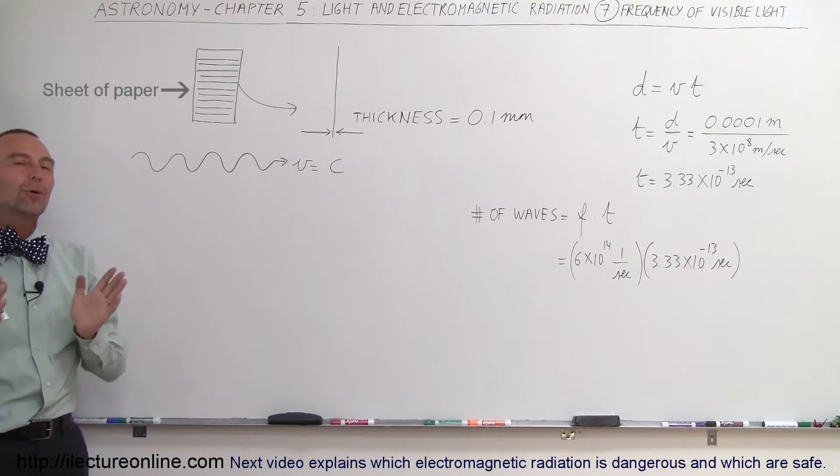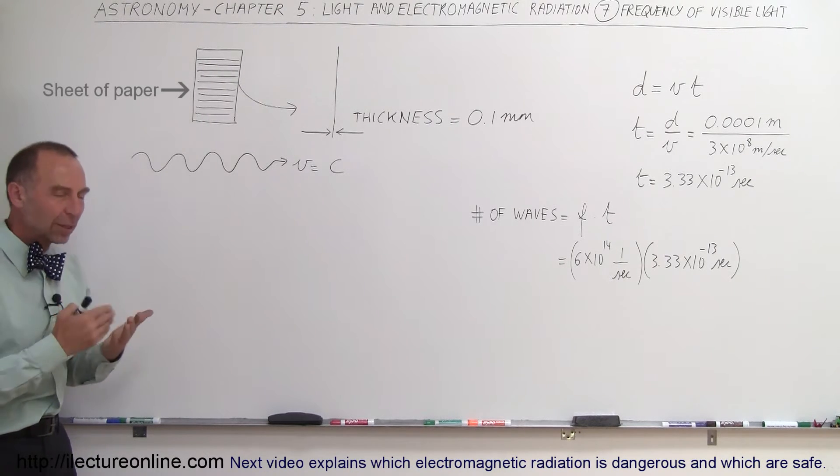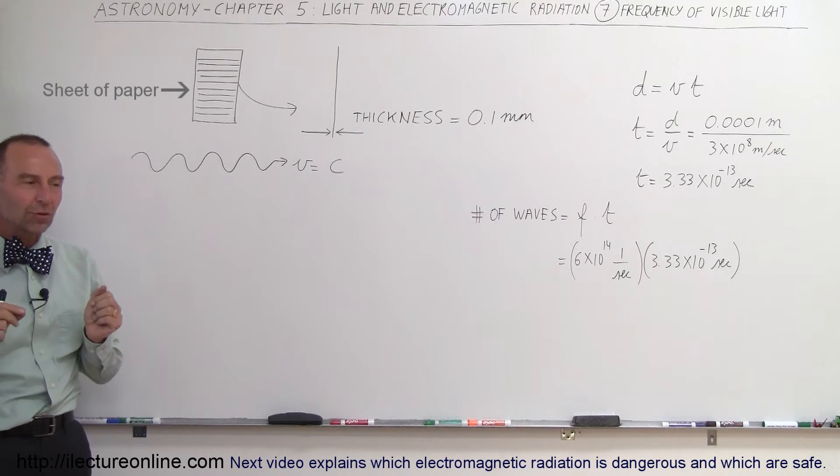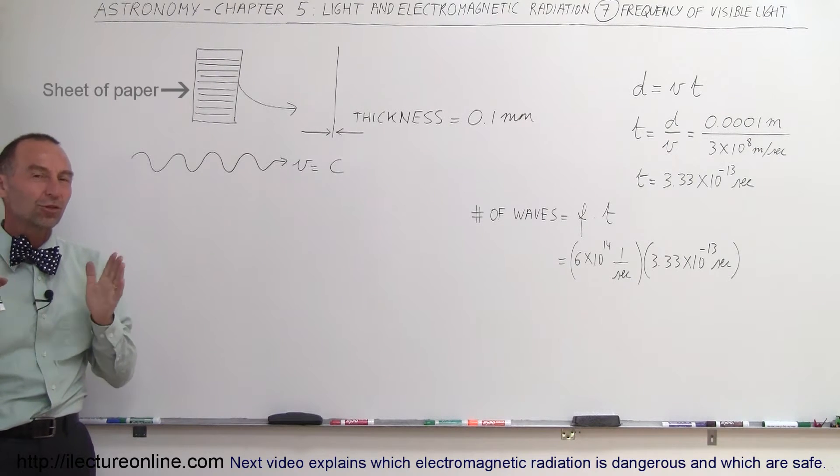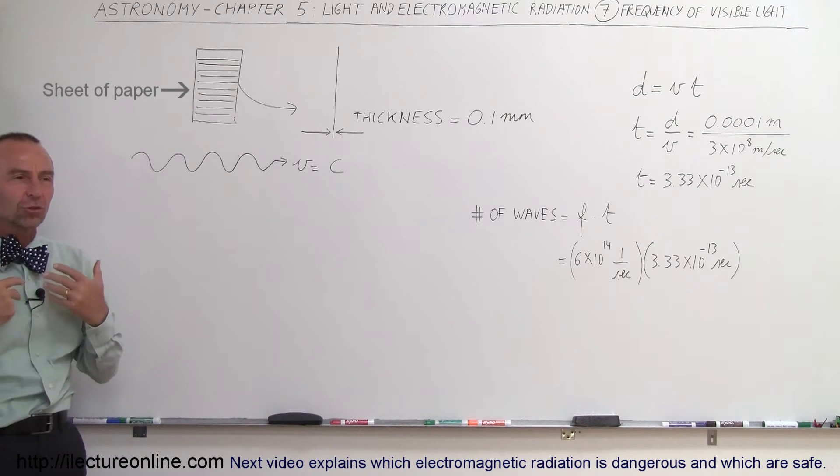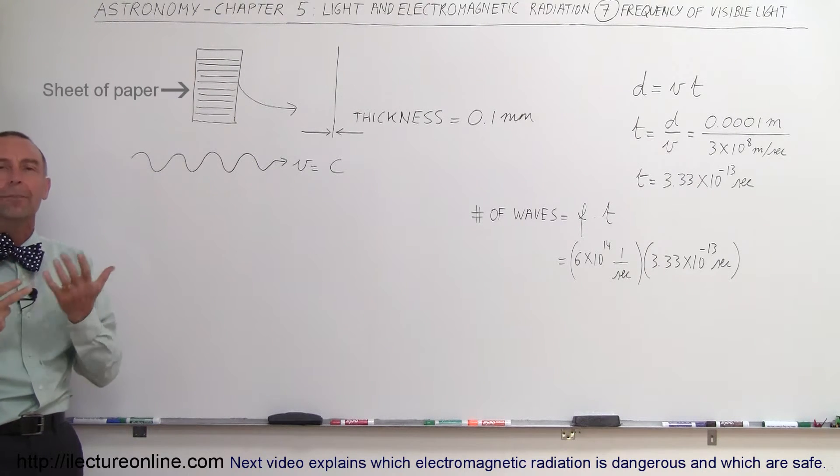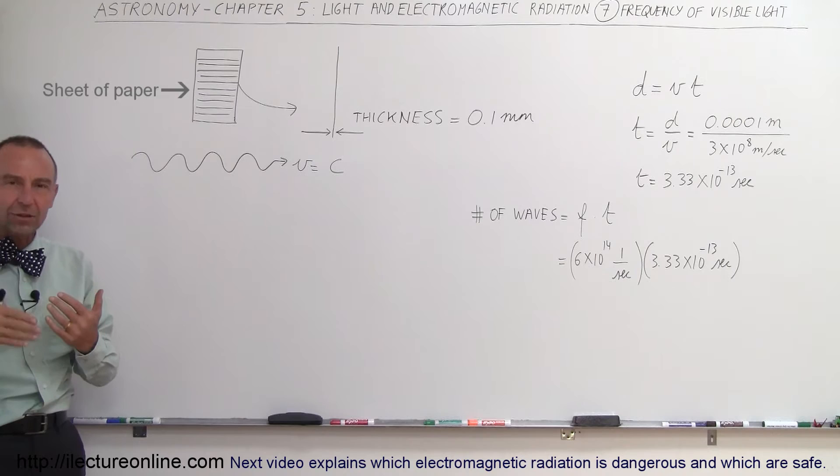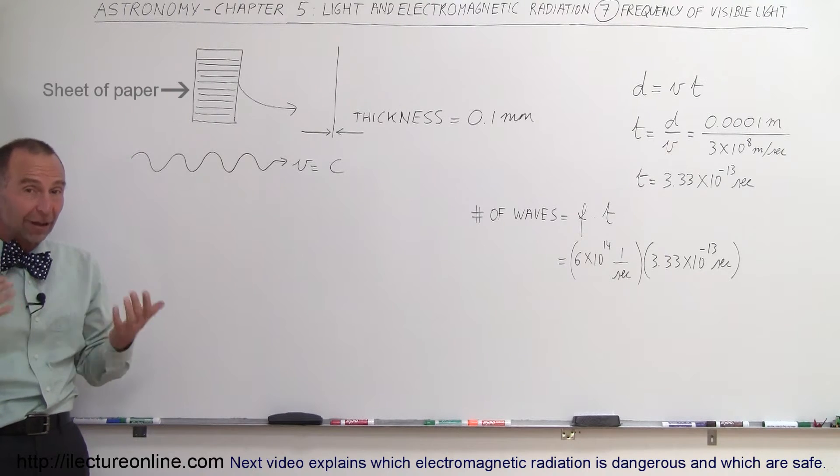Welcome to ElectronLine. Now we're going to talk about the frequency of visible light in a different way so we can really get some appreciation for what that really is. Because it's really hard to imagine - the numbers are so large it's hard to comprehend how fast electromagnetic radiation actually vibrates.